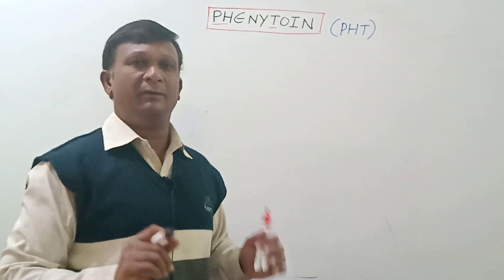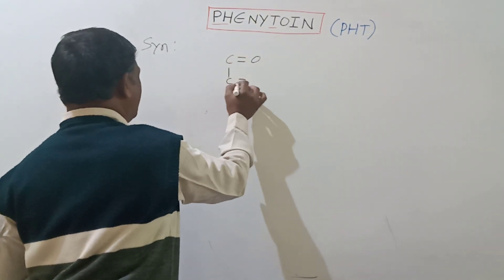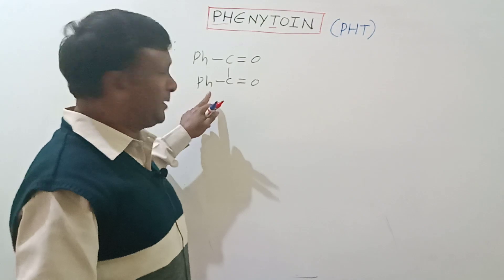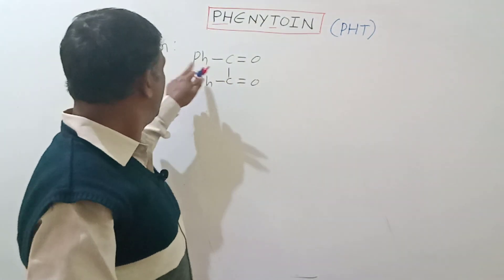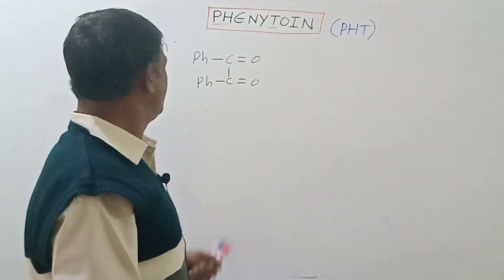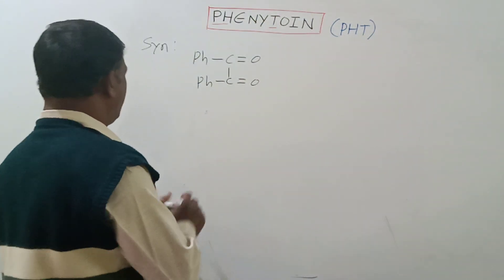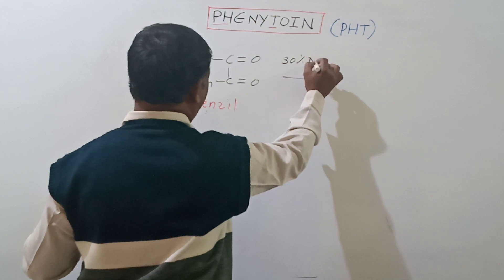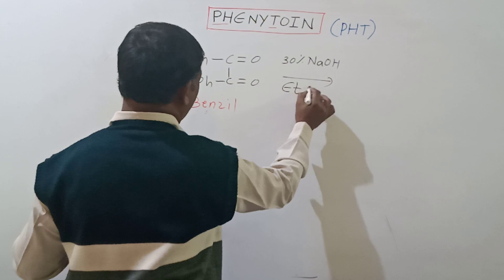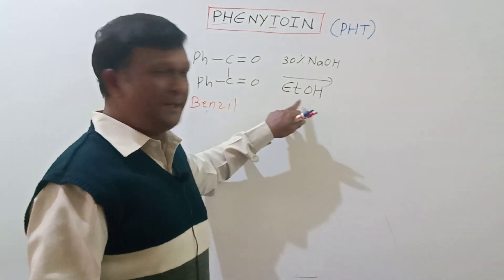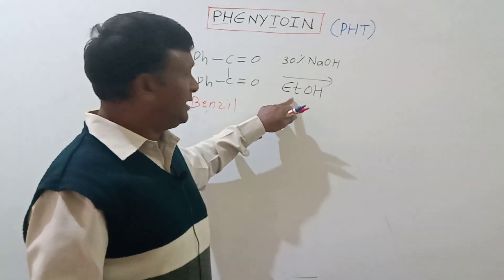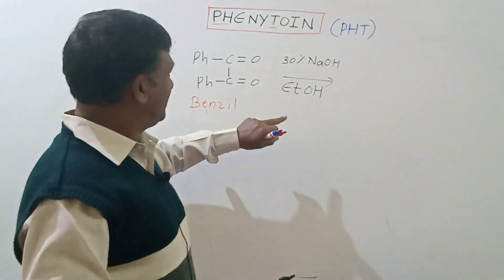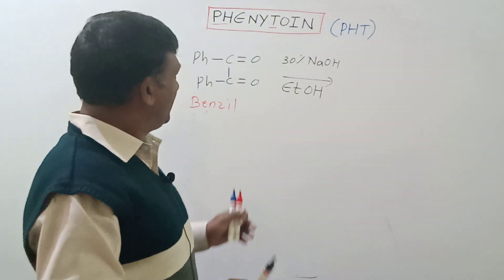Next we move on to the synthesis of this compound. For synthesis, our starting material is benzene. Here instead of C6H5, I wrote its symbol Ph, which simply stands for phenyl, that is C6H5 group. The benzene is treated with 30% NaOH in presence of ethanol. Ethanol can be written as EtOH, where Et stands for ethyl group.